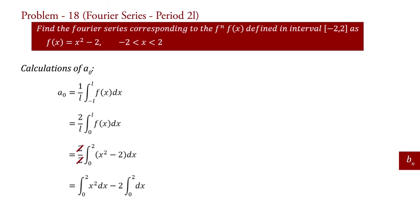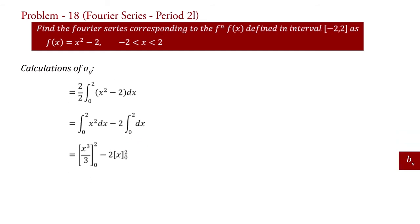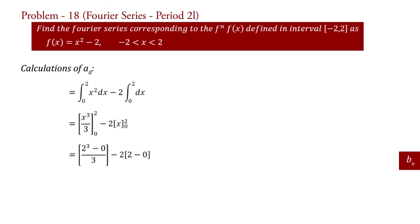This 2 cancels and by expanding we get a0 equal to integral 0 to 2 of x square dx minus 2 integral 0 to 2 dx. Taking integration, a0 equal to x cube upon 3 with limit 0 to 2 minus 2 into x with limit 0 to 2. Putting the value of limits, a0 equal to 2 cube minus 0 upon 3 minus 2 into 2 minus 0, which is equal to 8 upon 3 minus 4, which is equal to minus 4 by 3. This is the value of Fourier coefficient a0.